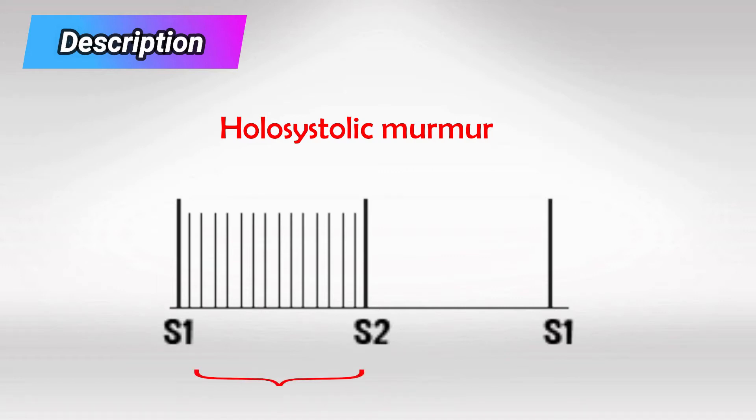It's a systolic murmur, so it has to be between the first and second heart sounds, and holo means constant.